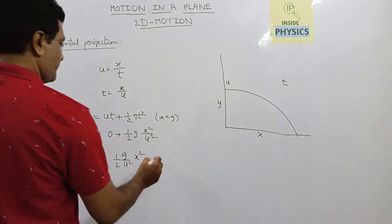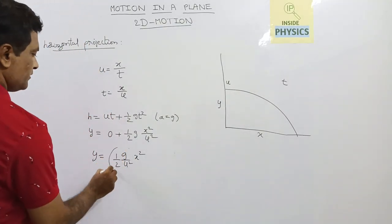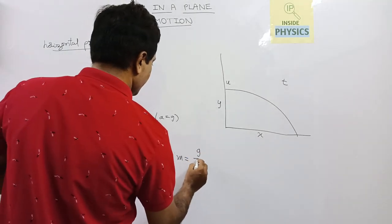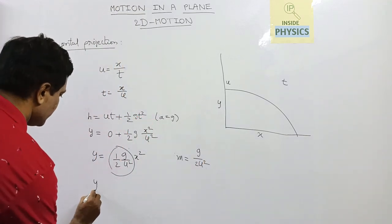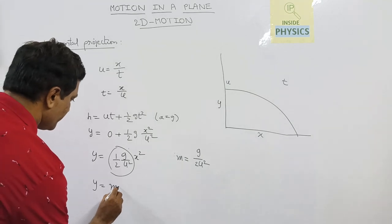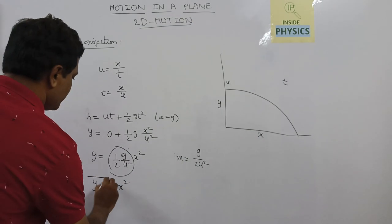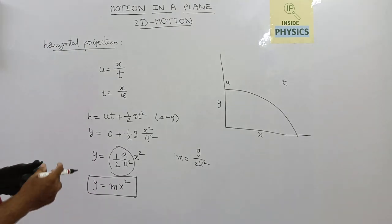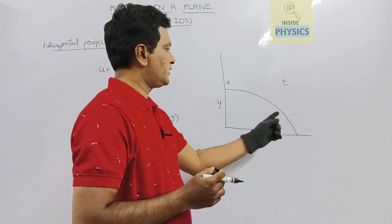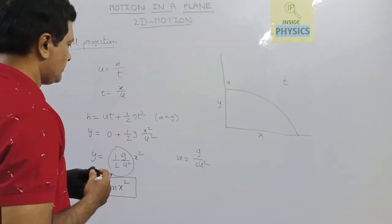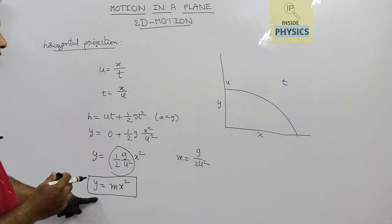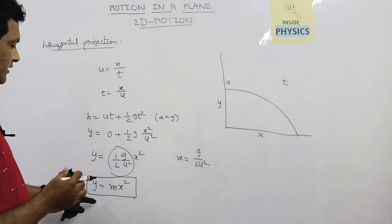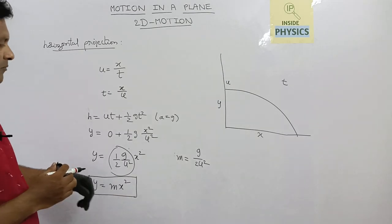This gives y equals (g / 2u²) times x squared. If we consider m equals g by 2u squared, we can write y equals m x squared. This equation represents a parabola. So a horizontally projected body follows an equation of a parabola — the trajectory, that means the path, can be written in the form of a parabola.